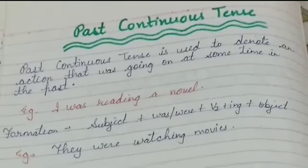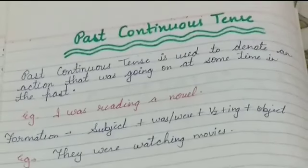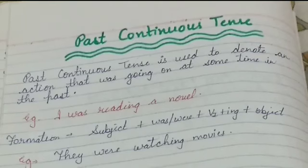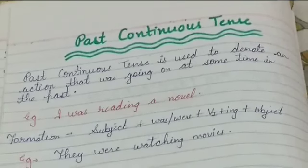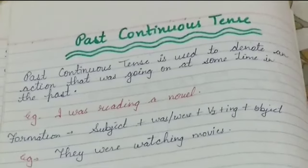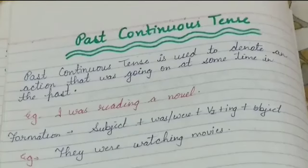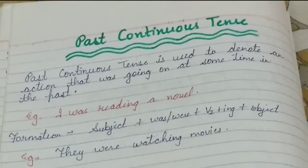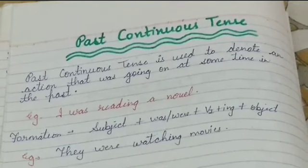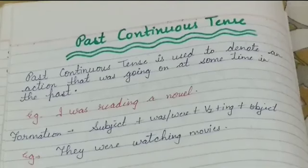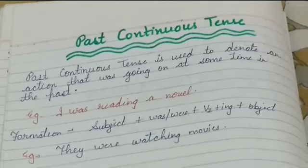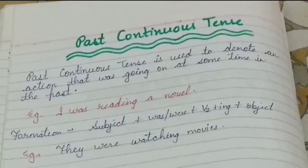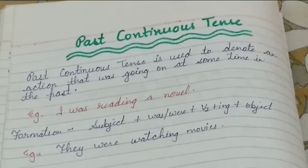Past continuous tense is used to denote an action that was going on at some time in the past — an action in progress in the past. Example: 'I was reading a novel.' The formation of this tense is: subject plus was/were plus first form of the verb plus -ing plus object. For example: 'They were watching movies.' Because the subject 'they' is plural, we use 'were'. If the subject is singular, we use 'was'.